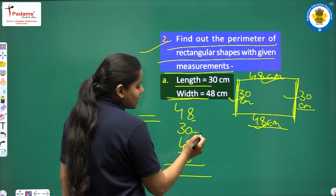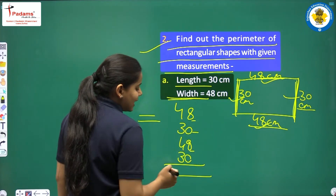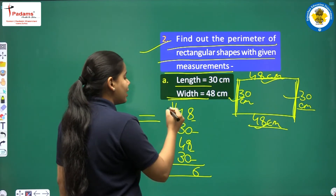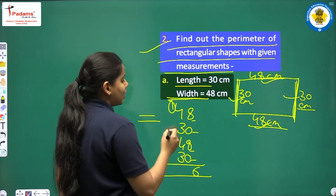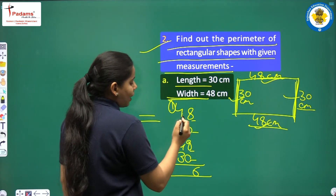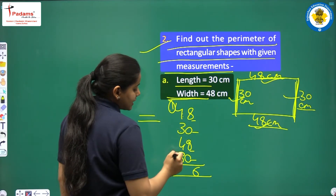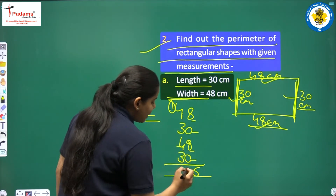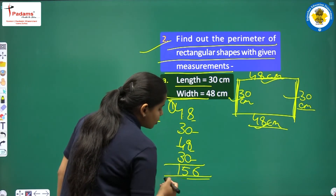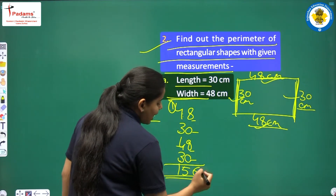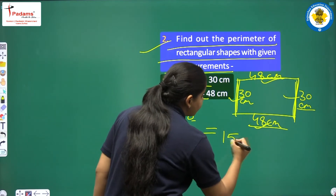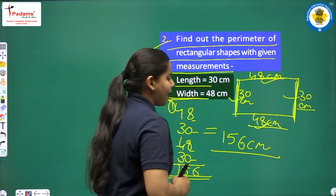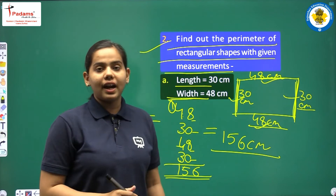Adding the ones place: 8 plus 0 is 8, plus 8 is 16, plus 0 is 16 — write 6 and carry 1. Then 1 plus 4 is 5, plus 3 is 8, plus 4 is 12, plus 3 is 15. So the answer is 156 cm. That is the perimeter of this rectangle.